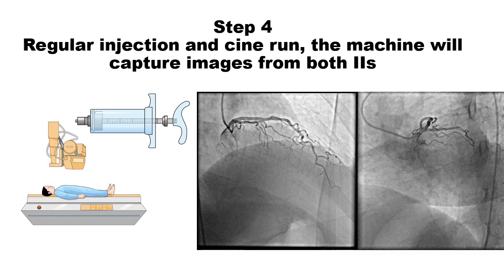Step four is just our regular injection and cine run, and the machine will capture images from both image intensifiers as we see here.